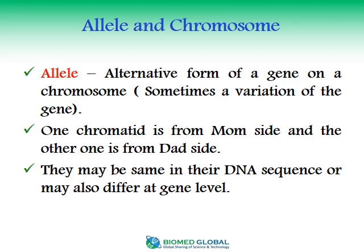There are several technical terms relevant to genes and chromosomes. One of these is allele. An allele is an alternative form of a gene on a chromosome, sometimes also called a variation of the gene. Since a chromosome has two chromatids — one from the mother and one from the father — each human being has two copies of the same gene, for example two copies of the insulin gene. These two copies are known as alleles and may be the same or may differ in their DNA sequence.